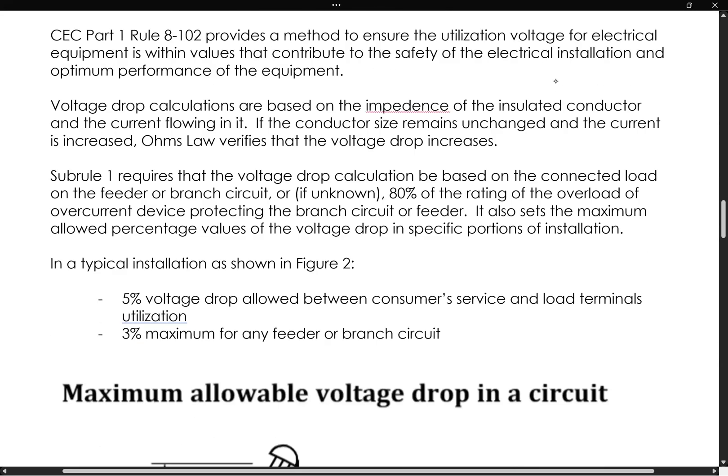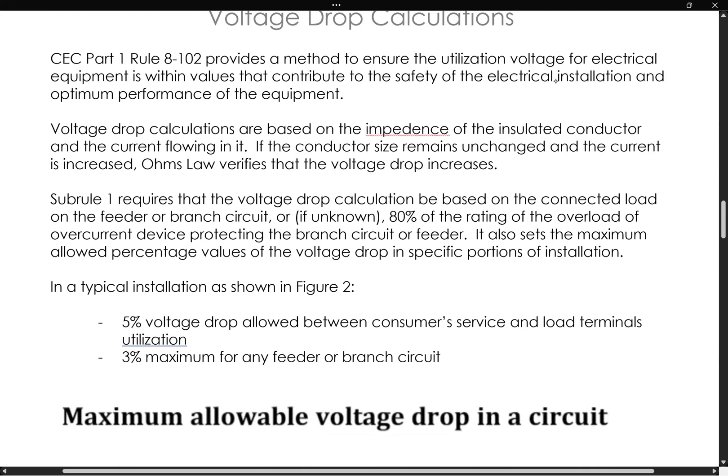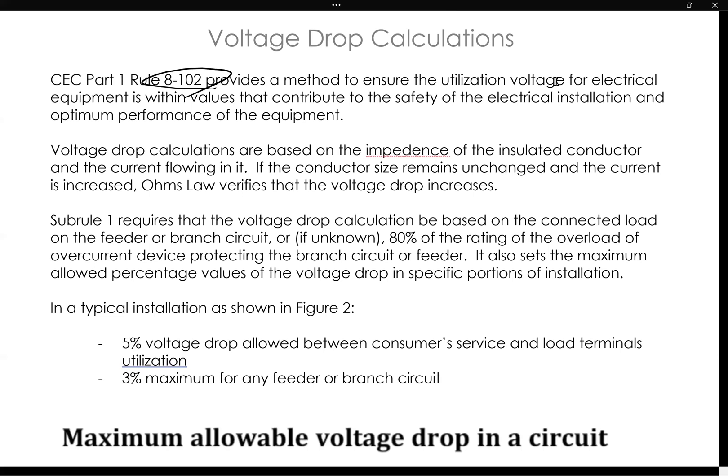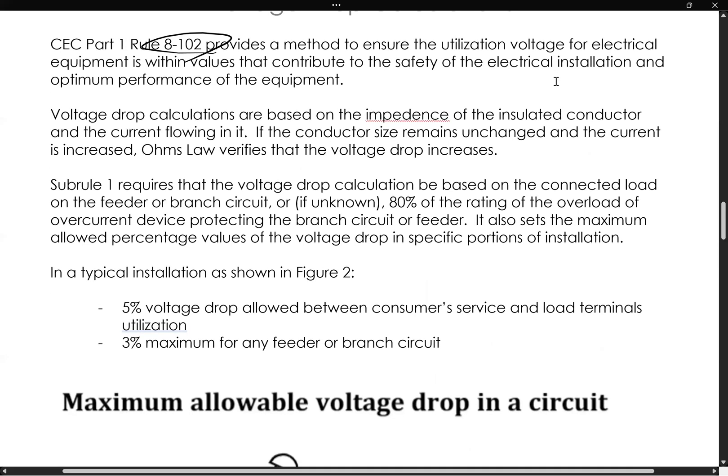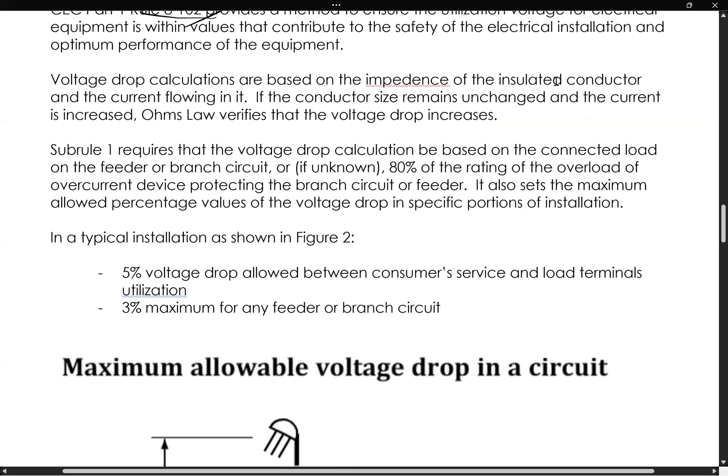So these voltage drop calculations, for the typical installation, rule 102 will give us a method to make sure that the utilization voltage for the equipment is within the values that contribute to safety of the electrical installation and optimum performance of the equipment. So they are based on the impedance of the conductor and the current flowing through it, which of course is addressed in Section 4 of the Canadian Electrical Code. And we know from Ohm's Law that if that conductor size is going to not change and the current is increased, then of course the voltage drop would have to increase as well. So that's the premise for these calculations, which again are not very difficult calculations to do, and we will get to them shortly.